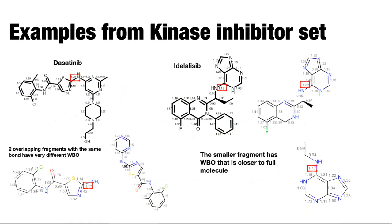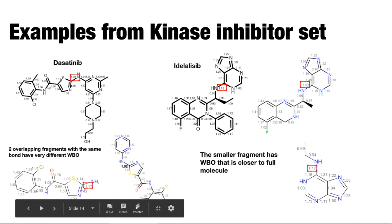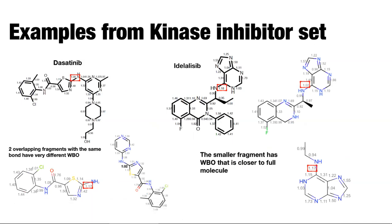Currently I'm working on the kinase inhibitor set. I fragmented these molecules and these are Wiberg bond orders calculated for those fragments, showing how different fragments have different bond orders for the same central bond. In sunitinib, for example, you can see a bond order of 1.02 here versus 1.17 for a different fragment — and from the torsion drives I've done, that different bond order will produce a visually different torsion profile.